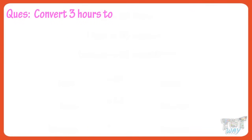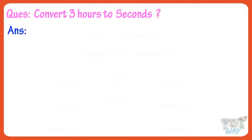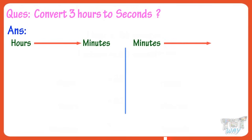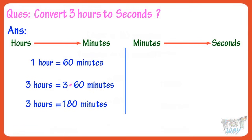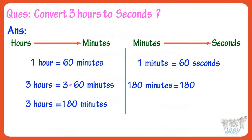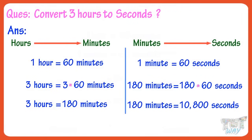Convert three hours to seconds. Now we have to convert hours to seconds. Let's first convert hours to minutes, and then minutes to seconds. One hour equals 60 minutes, so three hours equals 60 multiplied by 3, equals 180 minutes. One minute equals 60 seconds, so 180 minutes equals 180 multiplied by 60 seconds, which is 10,800 seconds.